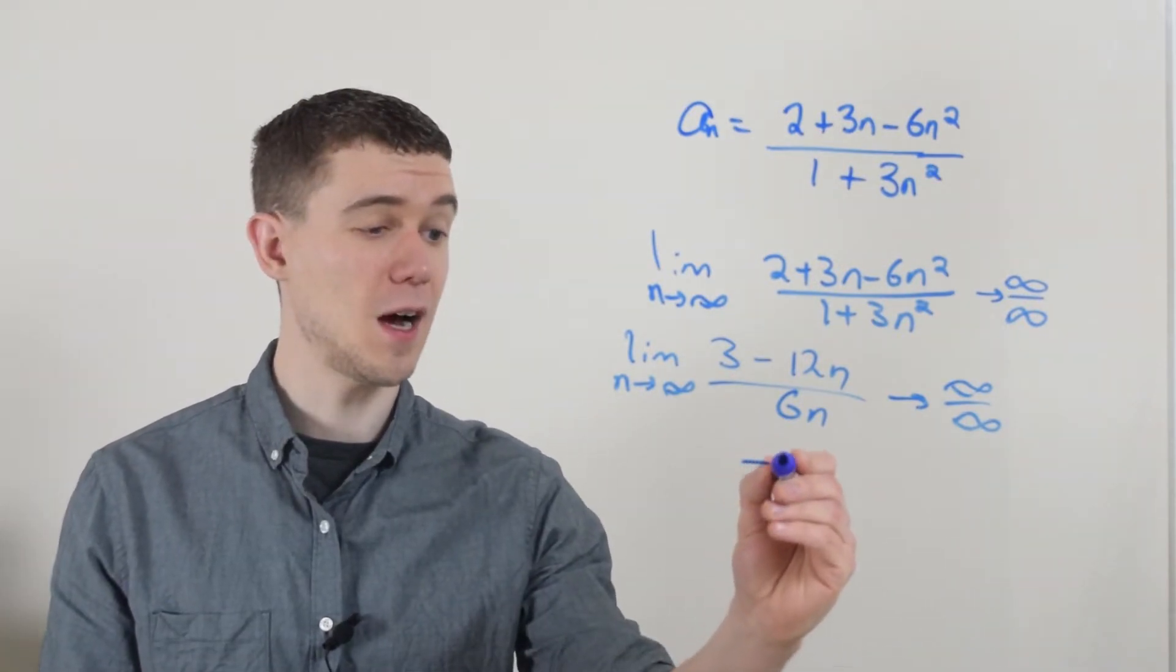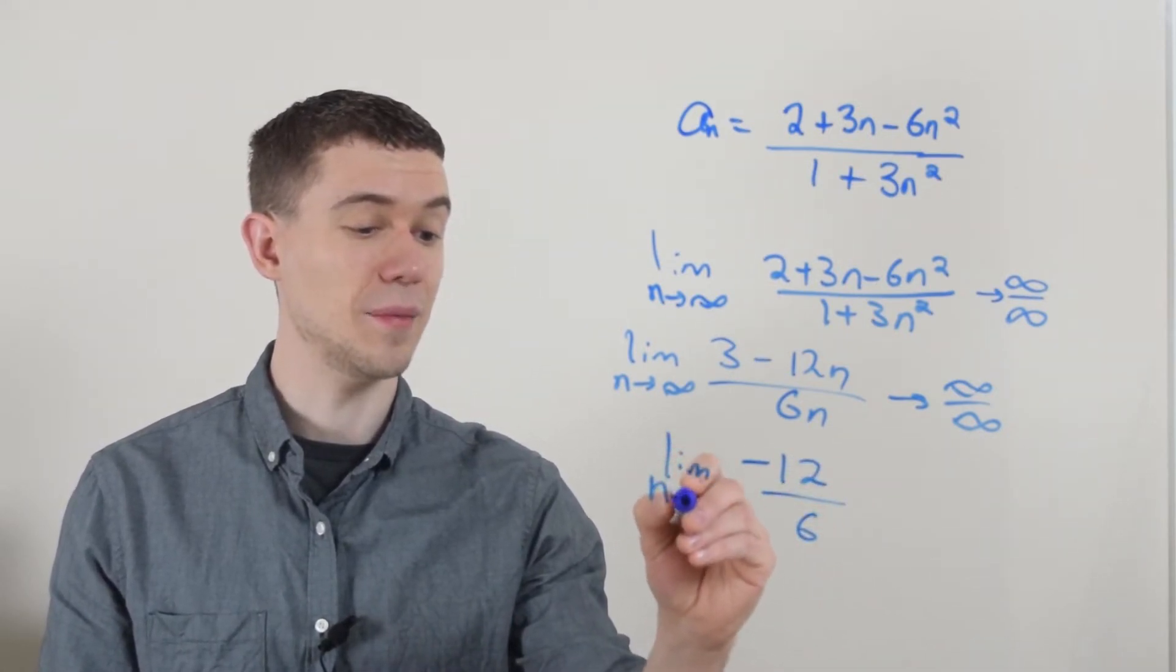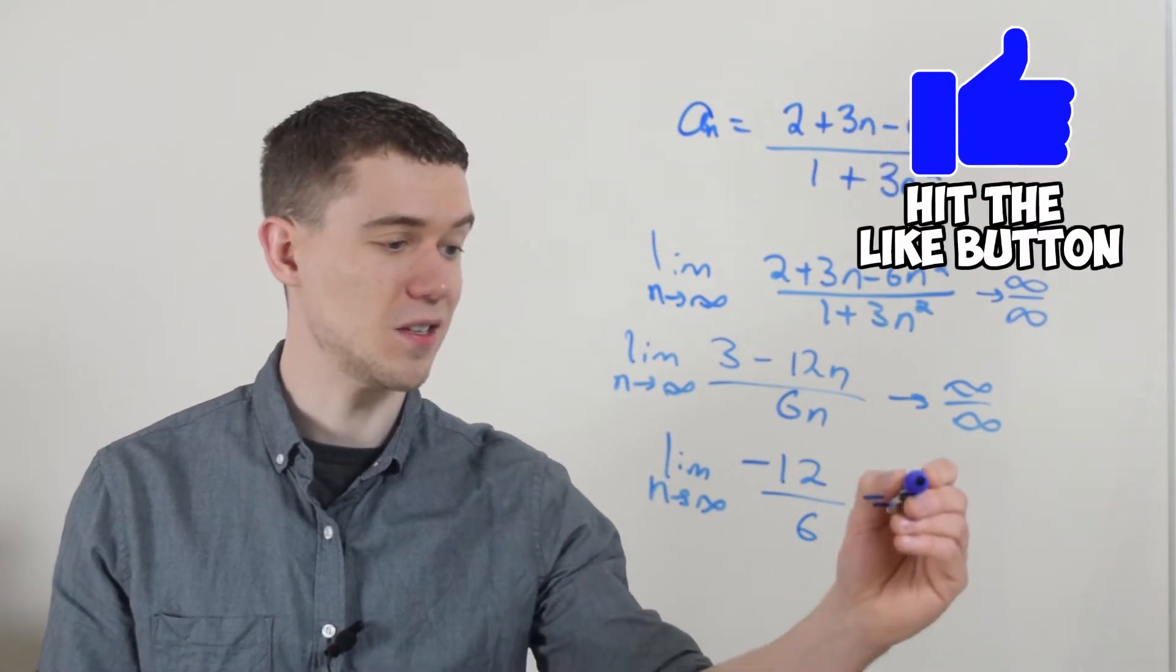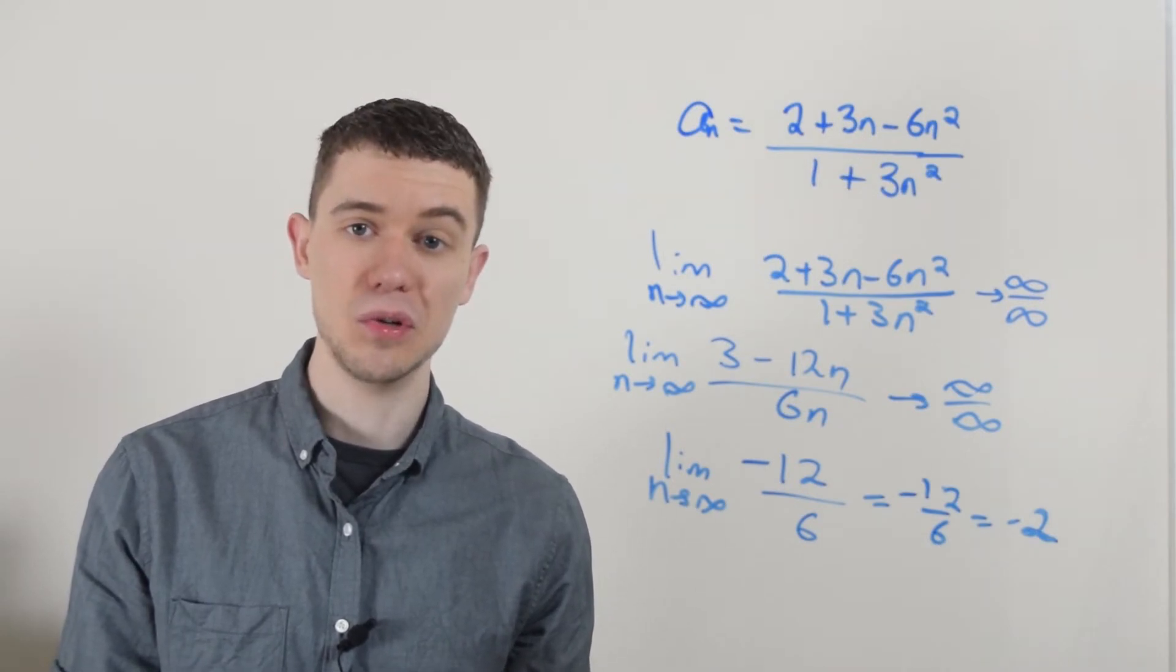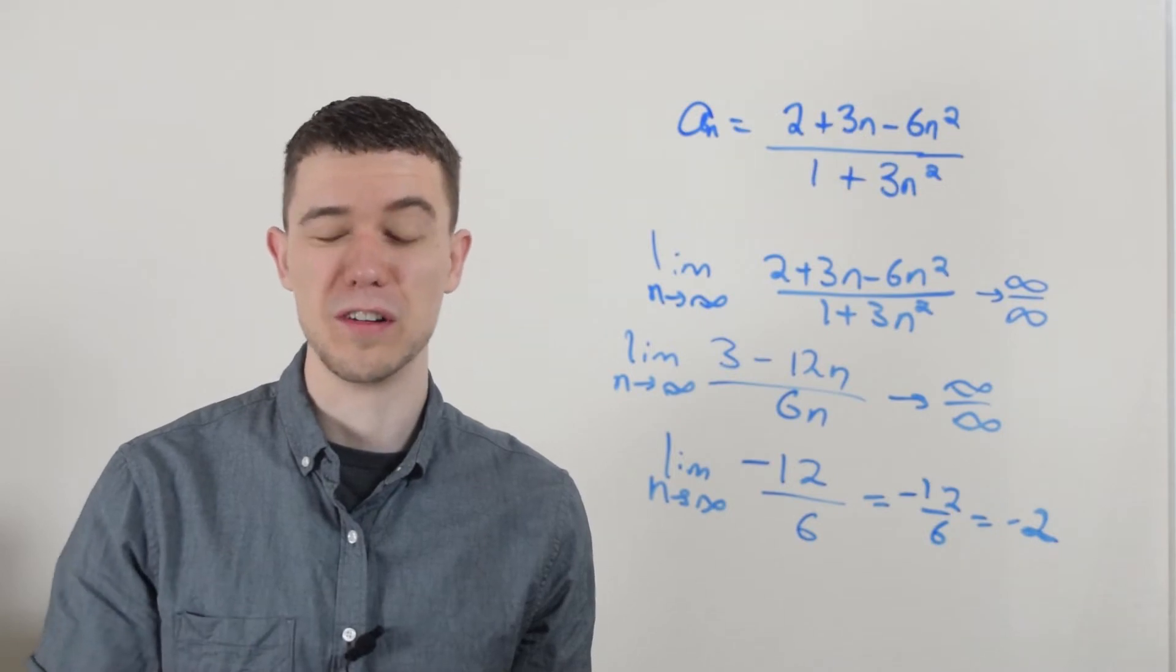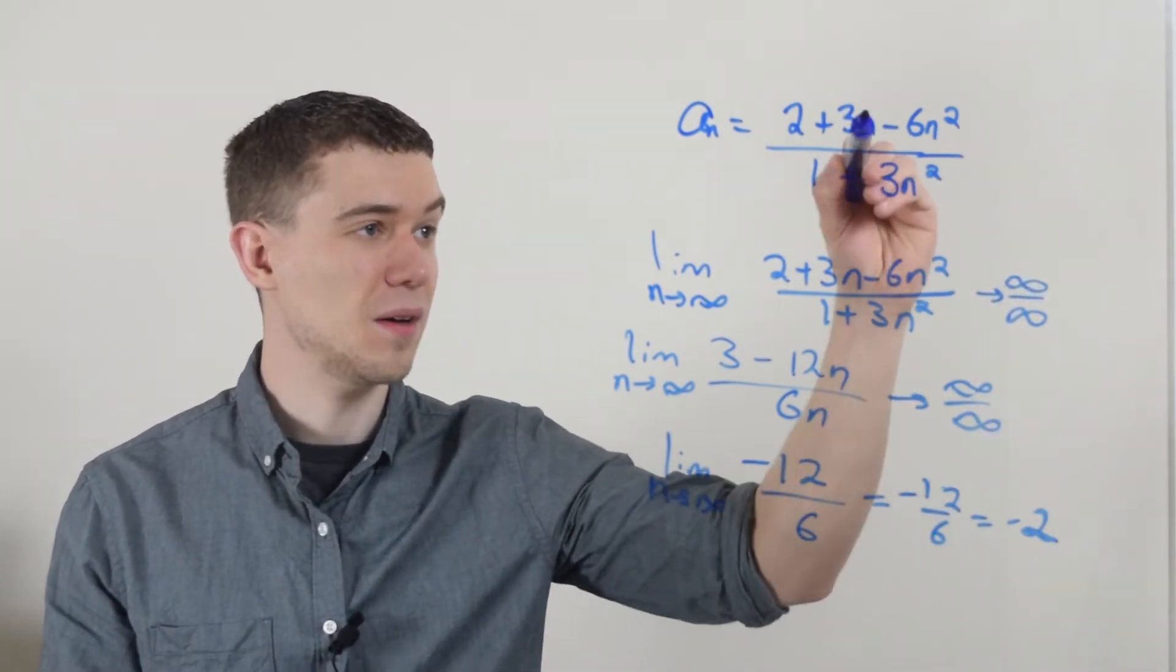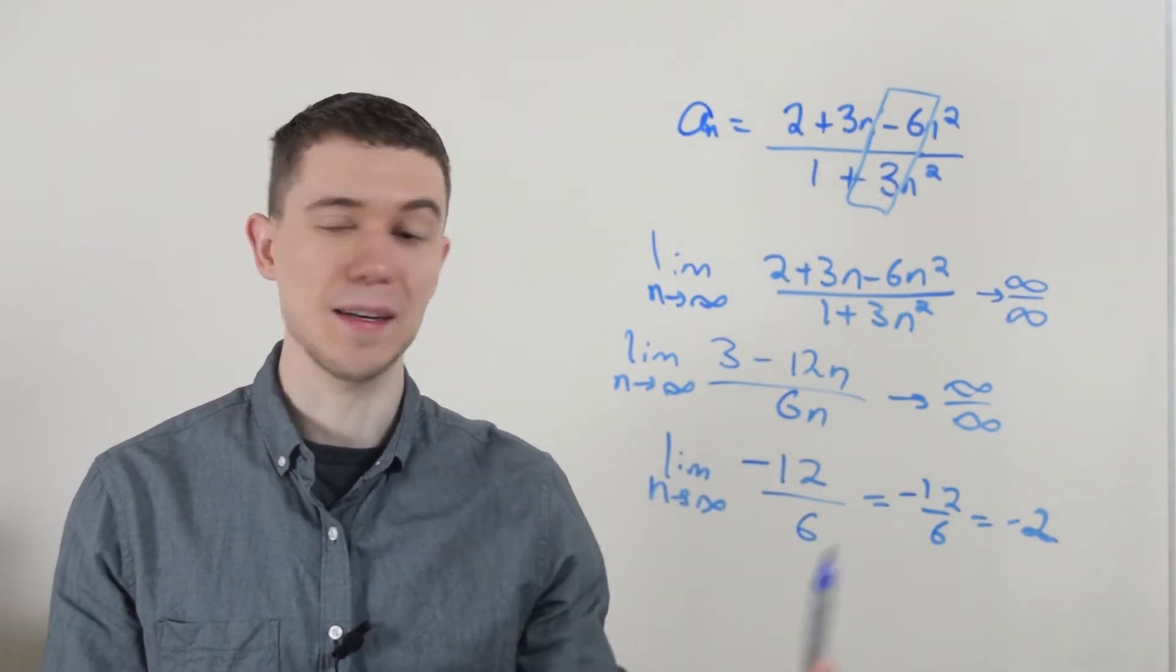I try this limit again. You'll see again I'm going to get the indeterminate form infinity over infinity, so I can do L'Hôpital's rule one more time. Take the derivative of the top, that will be minus 12, over the derivative of the bottom, which is 6. Now I just have a constant, so the limit is minus 12 over 6, or negative 2. This sequence converges to negative 2, which is the same result you would have gotten if you use the rule of thumb. You just look at the highest power on the top versus the highest in the denominator. In this case they're the same, so you would just divide the coefficients, minus 6 over 3, which is minus 2.